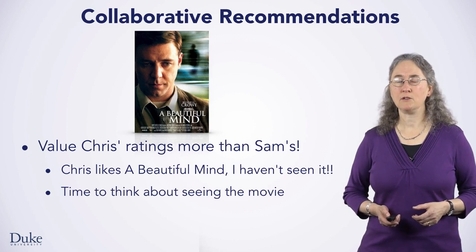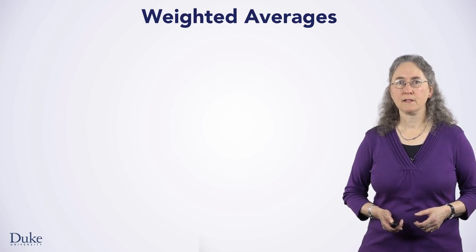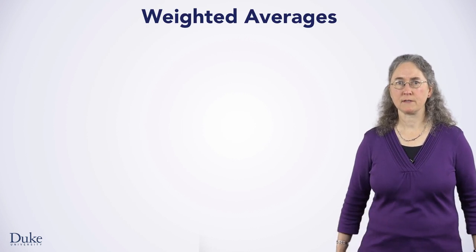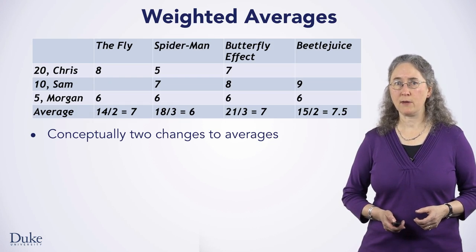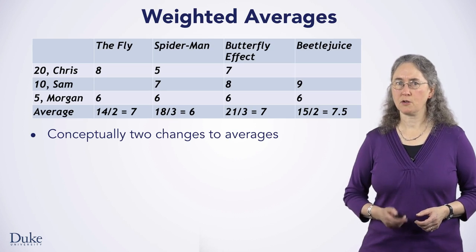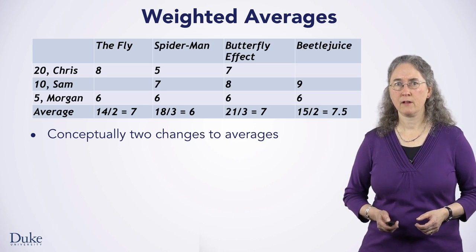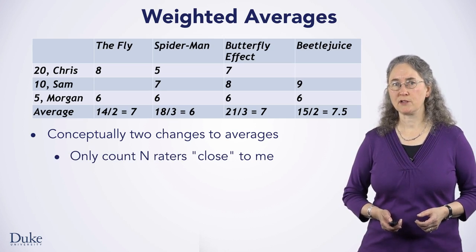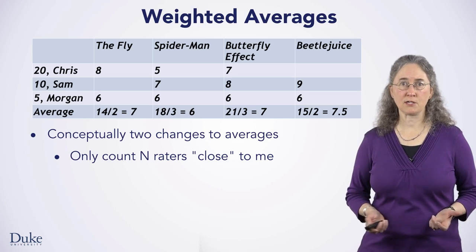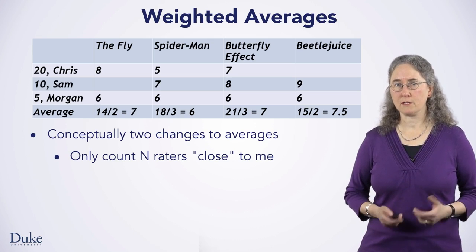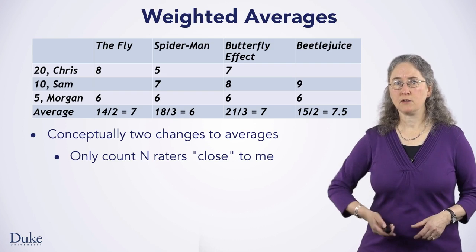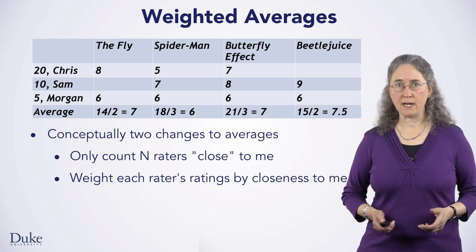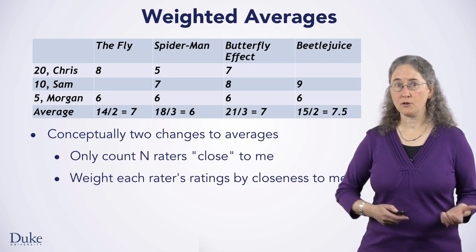This is the general idea behind the new program you'll be writing. Let's look at how to calculate these weighted averages. There are two conceptual changes to the code you've already written that makes recommendations based on averaging all user ratings. In the table below are ratings from three raters: Chris, Sam, and Morgan. The first change is to only use ratings from raters close to me, and the number of close raters is a parameter, so you might use n equal to 10 to use 10 close raters. The second change is to weight the ratings by a measure of how close a rater is to me.